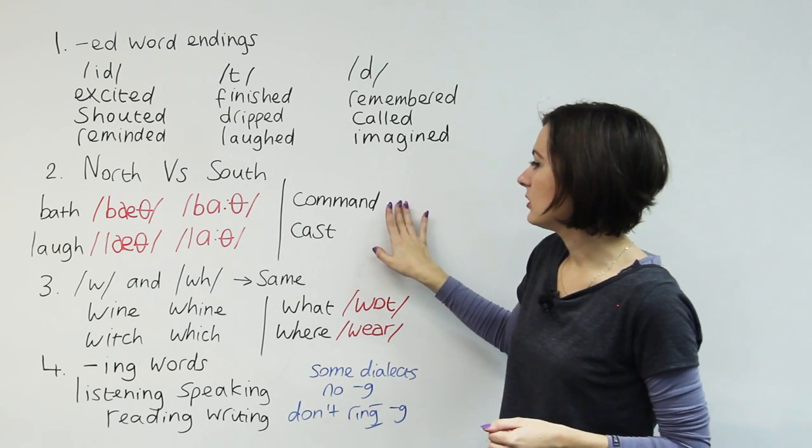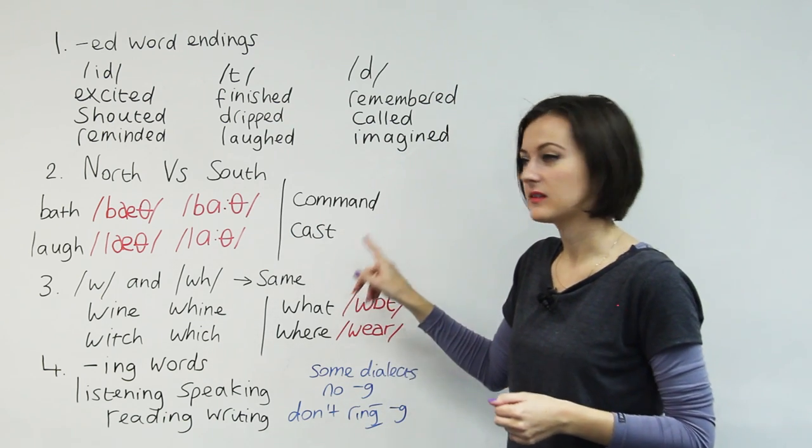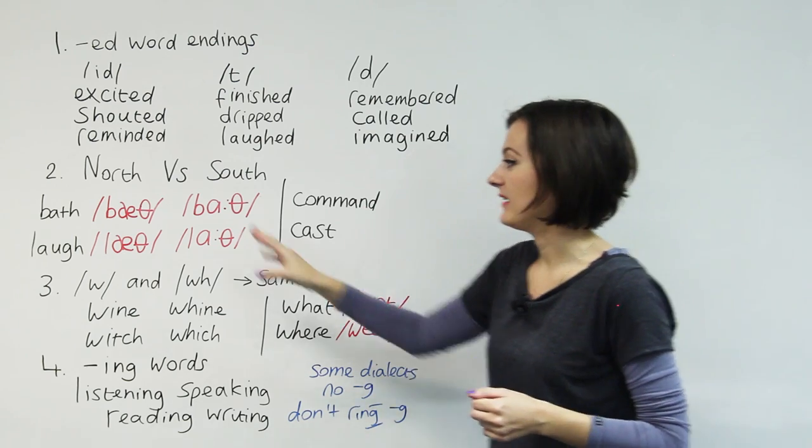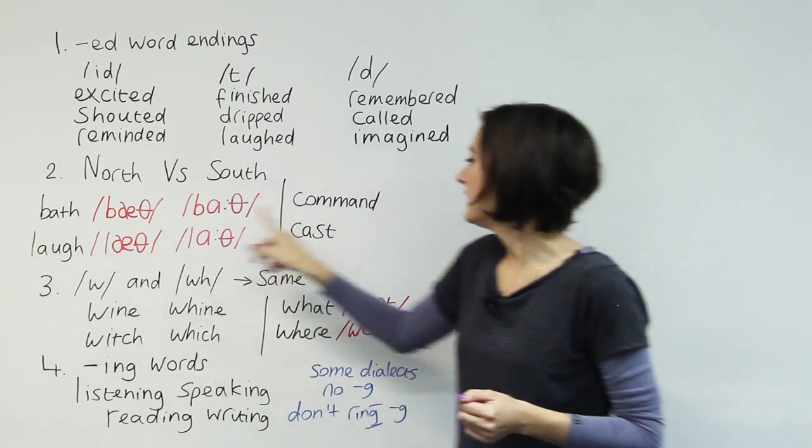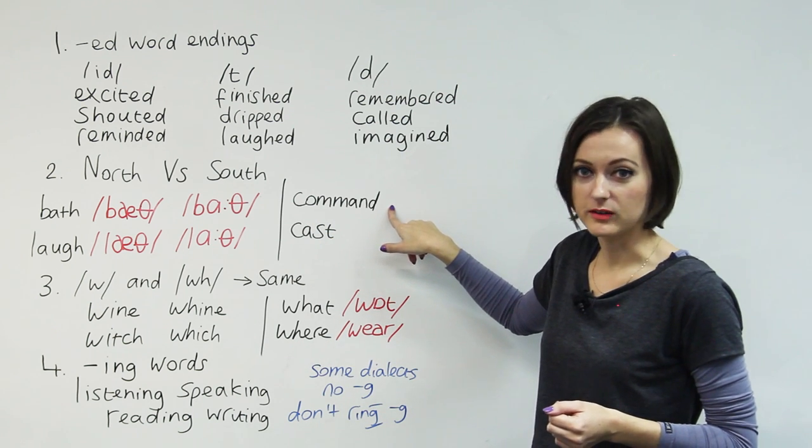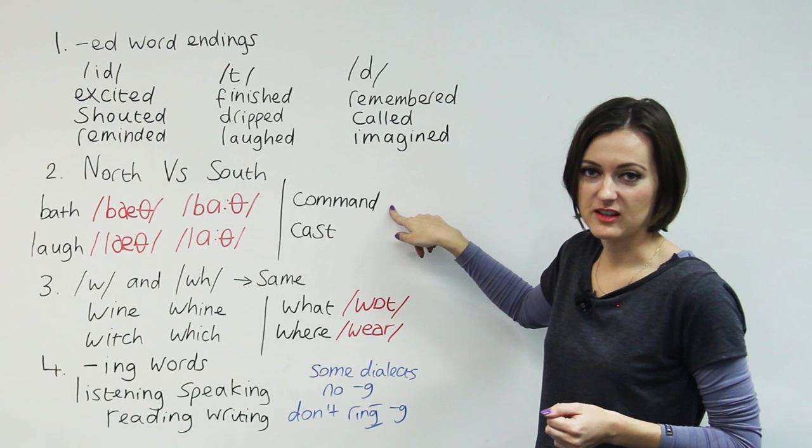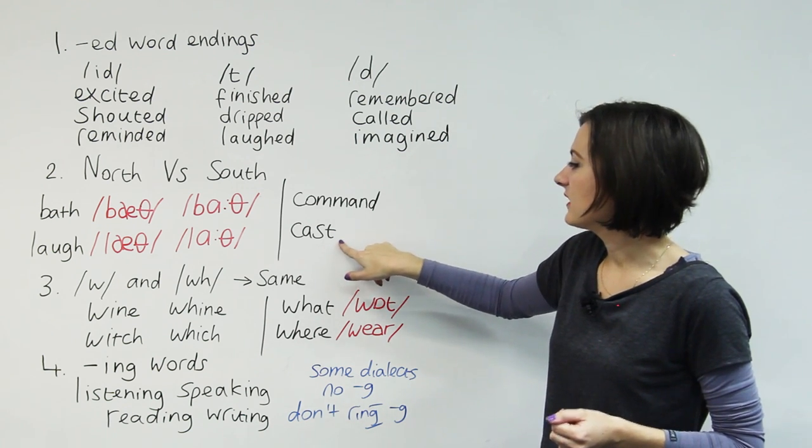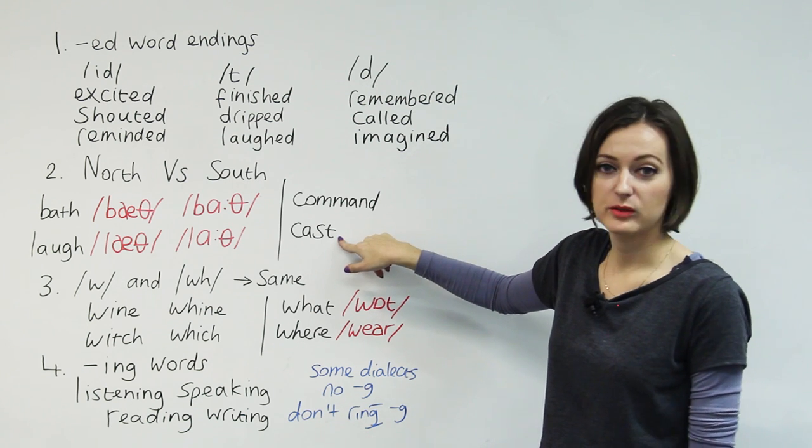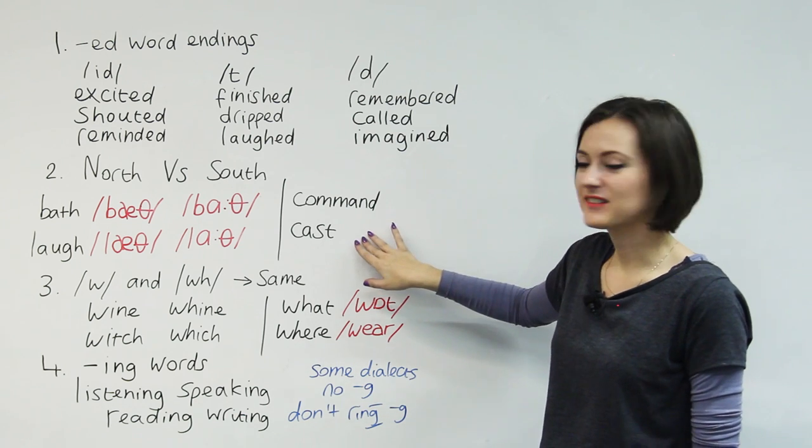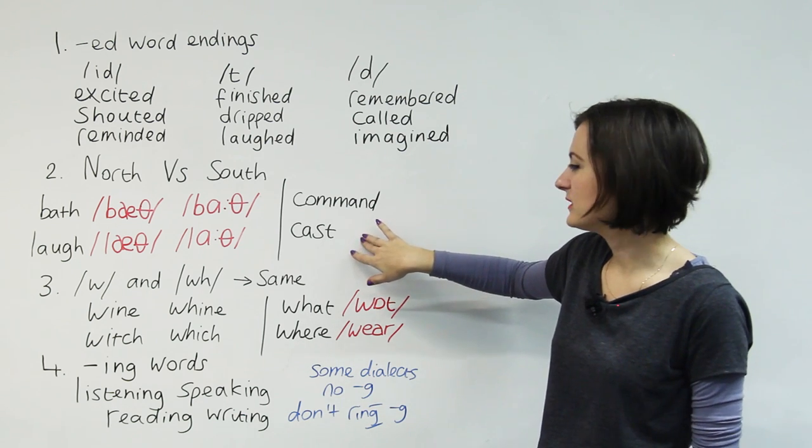And you can also hear it in these two words. It doesn't have to be the first or only vowel in the word. In the southern pronunciation, this is command. But in the northern pronunciation, it's command. And the southern pronunciation of this word is cast. Northern pronunciation is cast. The cast of Brookside came to London.